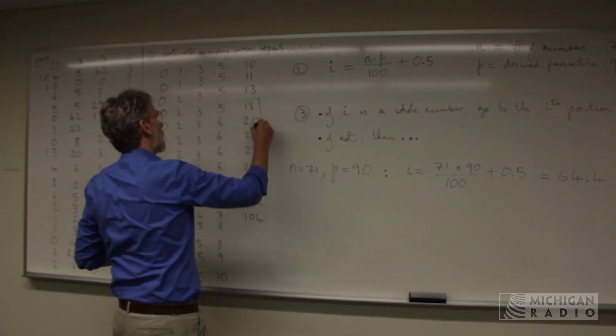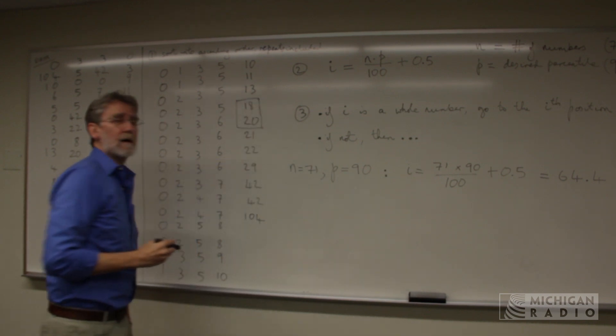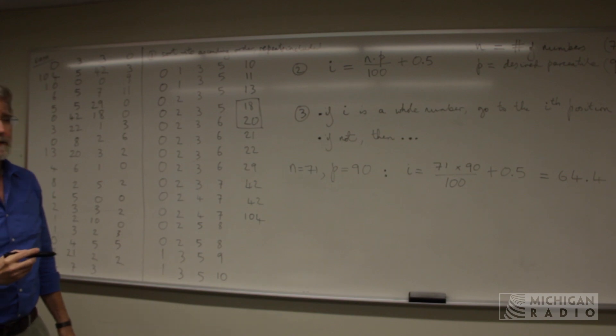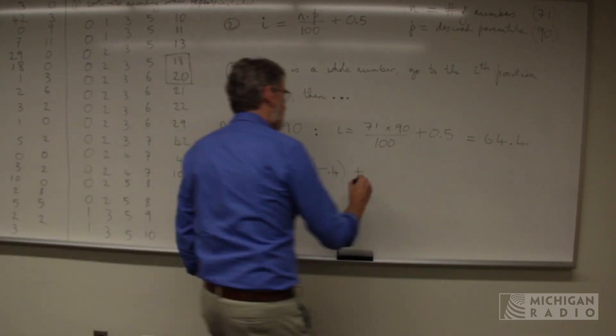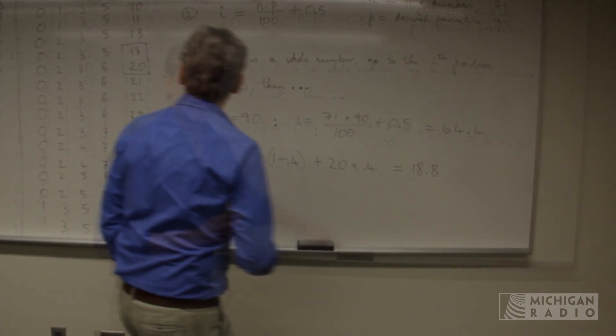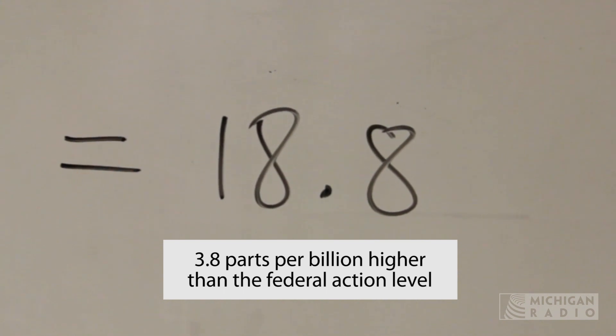So it's in here somewhere. My 90th percentile is somewhere between 18 and 20. I'll show you how to do that. So the 90th percentile, it's 18.8.